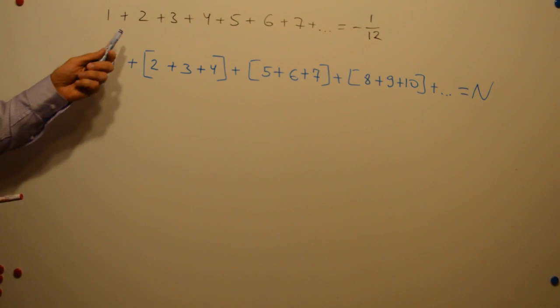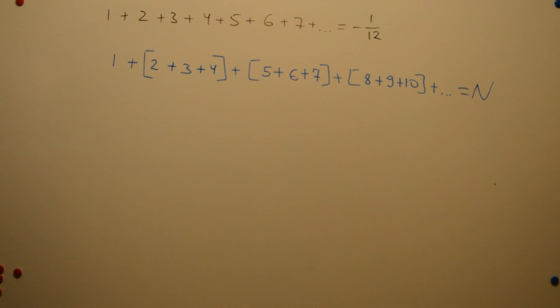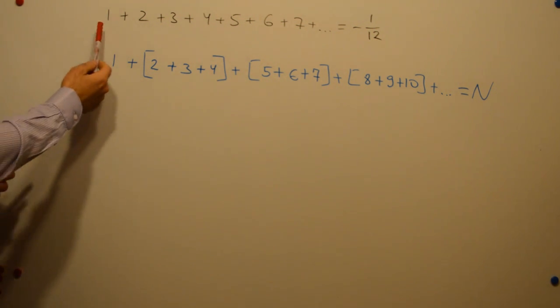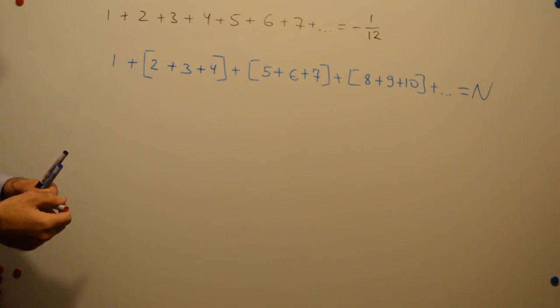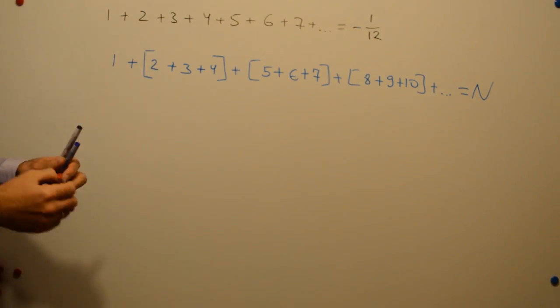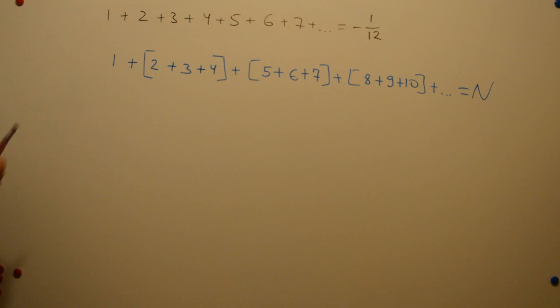There is a video on YouTube which shows that the sum of all natural numbers from 1 to infinity equals minus 1/12. So I watched that video and I started to think myself about this problem and this is what I could come up with.